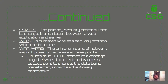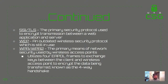WEP is an outdated wireless security protocol which is still in use, so it might be worth your time to get into your router and ensure it's using WPA2 — I had the option of WEP on my own router but it was not the default, luckily. WPA and WPA2 are the primary means of network security used by wireless access points — they utilize four EAPOL frames to exchange the key between the client and wireless access point to encrypt the data, known as the four-way handshake.